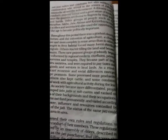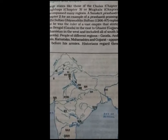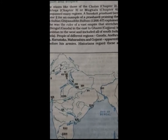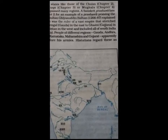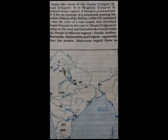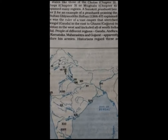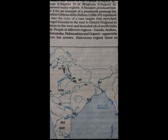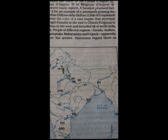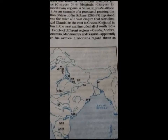Now comes the next topic: regions and empire. Large states like the Cholas, Tughlaq, and Mughals encompassed many regions. At different time periods, different rulers built their own empires.